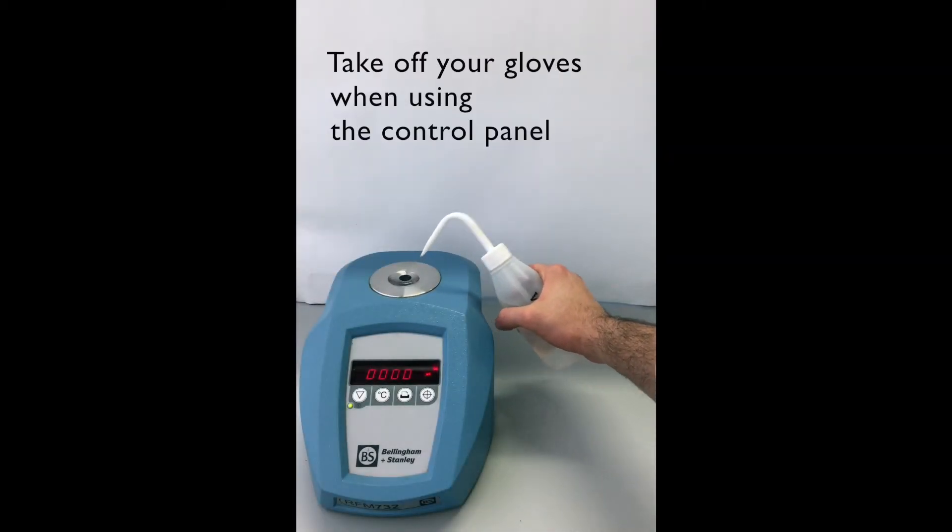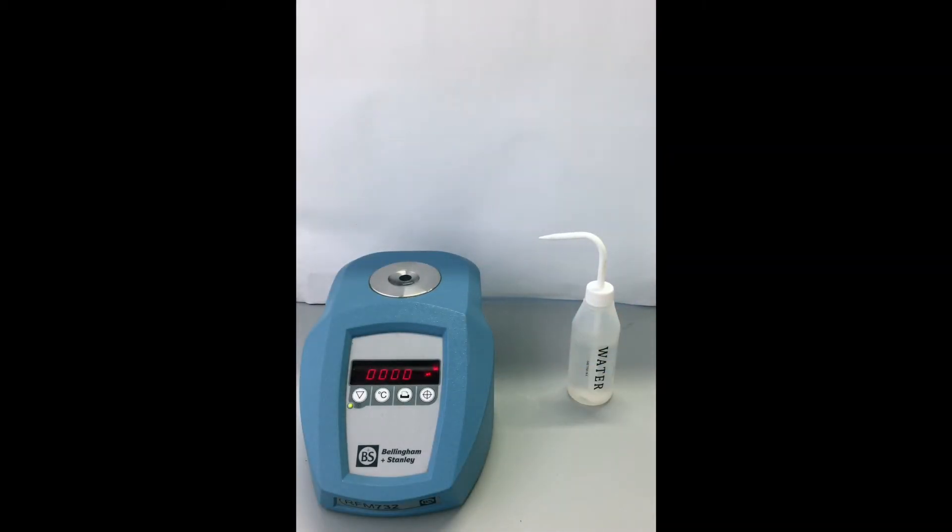Firstly, add some distilled water to the measuring prism and press the read key. 1.33300U1SC should show up in the display. Be sure to do this before you take your sample measurements.